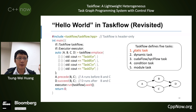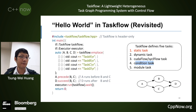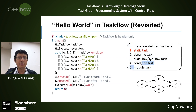A static task is the most basic task type in Taskflow — it takes a callable object and runs it. A dynamic task lets you spawn a task dependency graph during execution of a task, enabling dynamic parallelism. A CUDA flow or SYCL flow task lets you describe GPU workloads in a task graph and offload them to GPU or any SYCL device like FPGA or embedded devices. In the simple A, B, C, D example we've seen, those four tasks are static tasks — they simply take a lambda function object and run it.